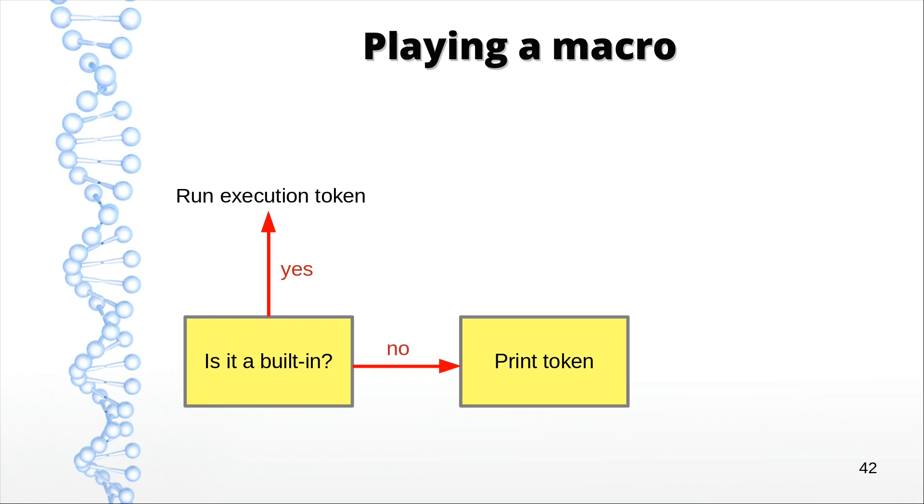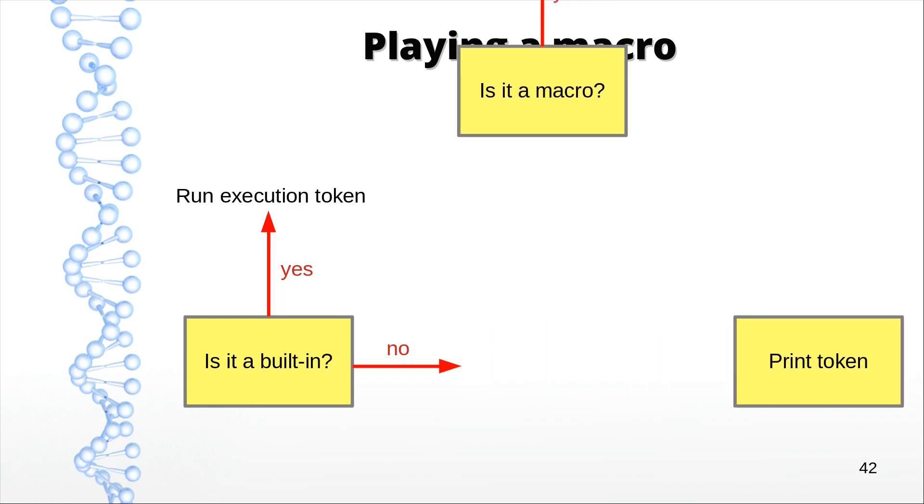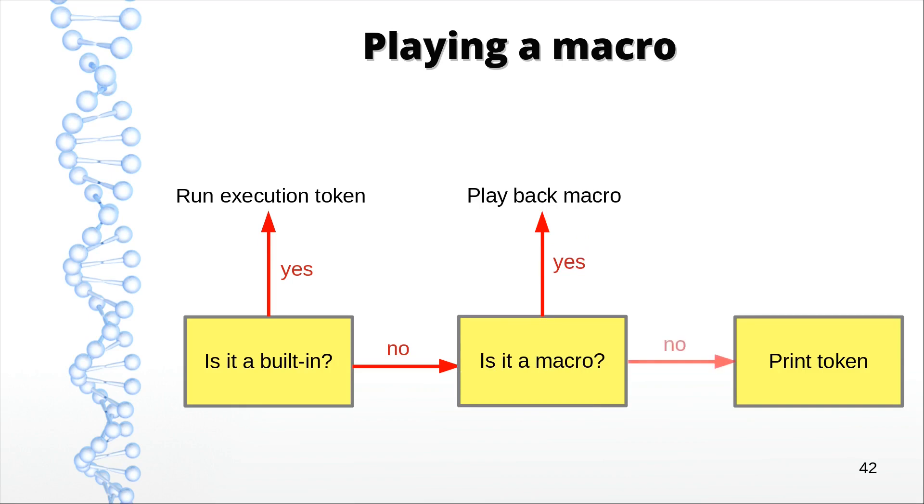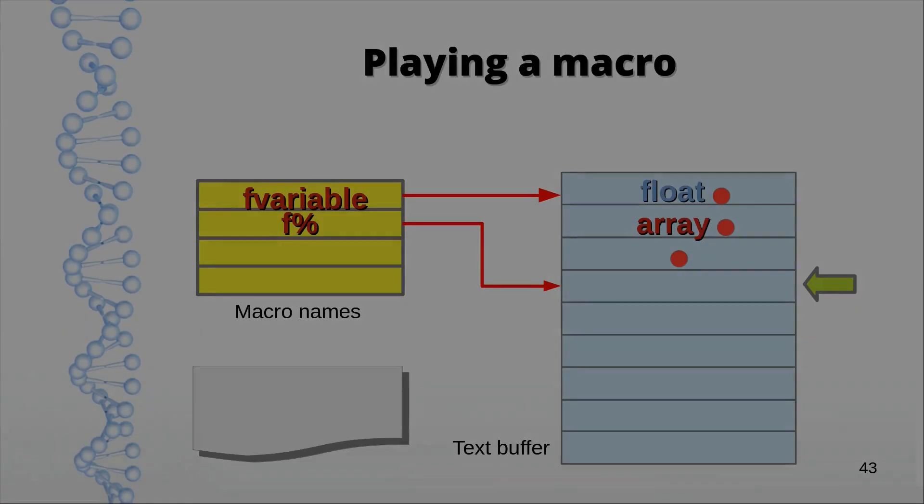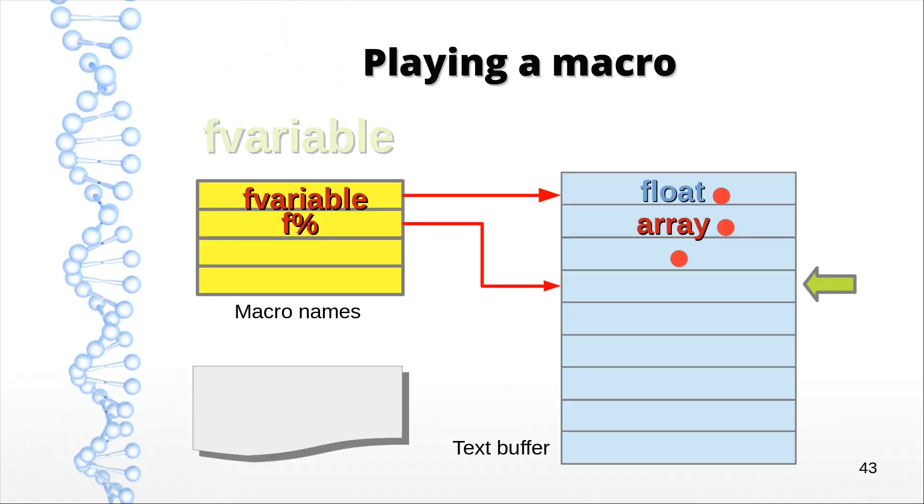But now we have to ask ourselves the question, is it a macro? And if so, we have to replay it. Let's assume it is. We found its name in our macro name structure, and simply followed the pointer to see where the contents of the macro reside. Then we start writing the tokens in the string buffer to the output file until we hit a zero length string. Then we're done.